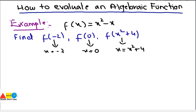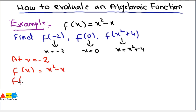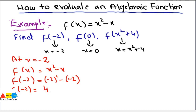Let's start finding them one by one. We start with x = -2. Since f(x) = x² - x, f(-2) means replacing x at all places by -2, giving us (-2)² - (-2). Simplifying: (-2)² is 4, and minus negative 2 is plus 2, so 4 + 2 = 6.